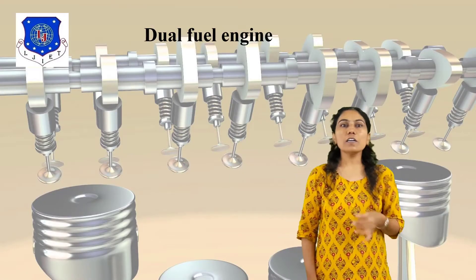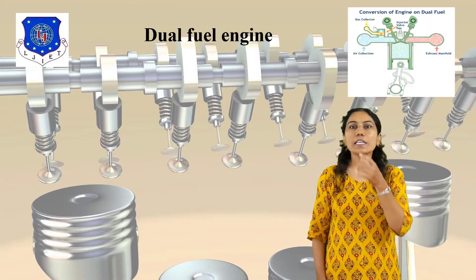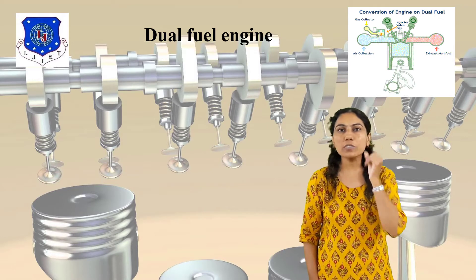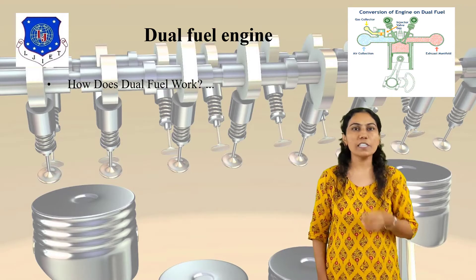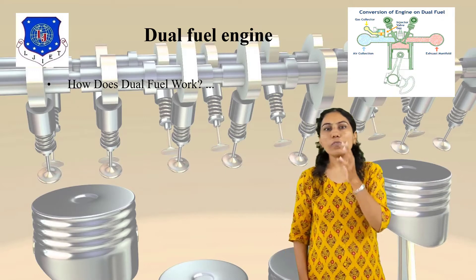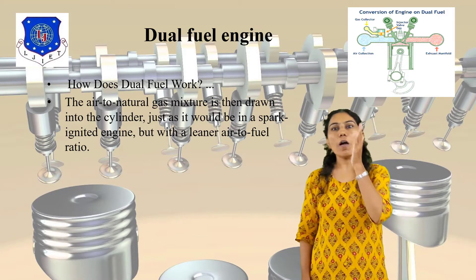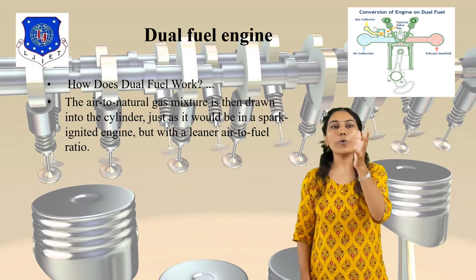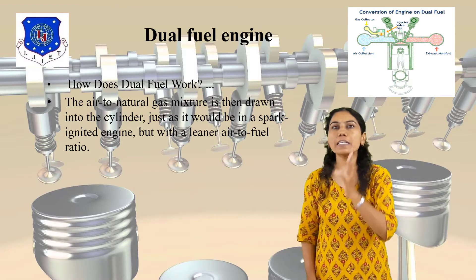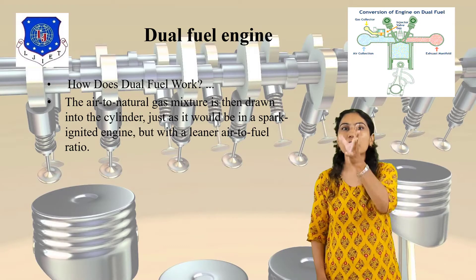What is a dual fuel engine? You can see the diagram showing how a dual fuel engine works. The main component is the air-to-natural gas mixer. This air-to-natural gas mixer is drawn into the cylinder.